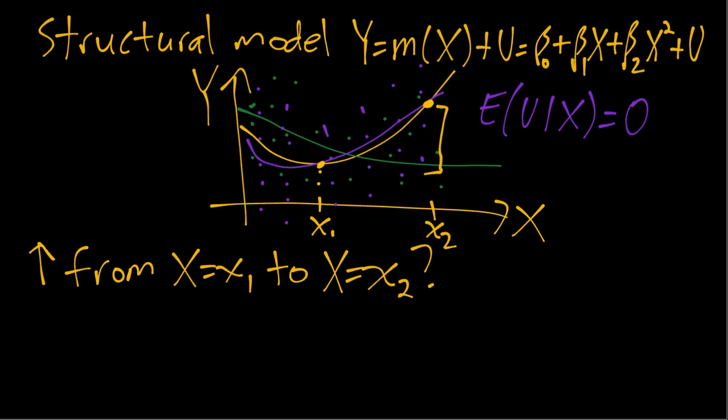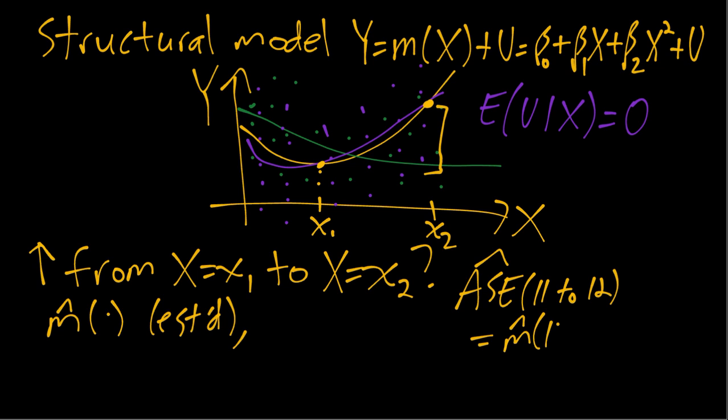So once we've estimated our model to get our estimated M hat function, then our estimated average structural effects going from X1 to X2, we just plug in X1 and X2 and subtract.